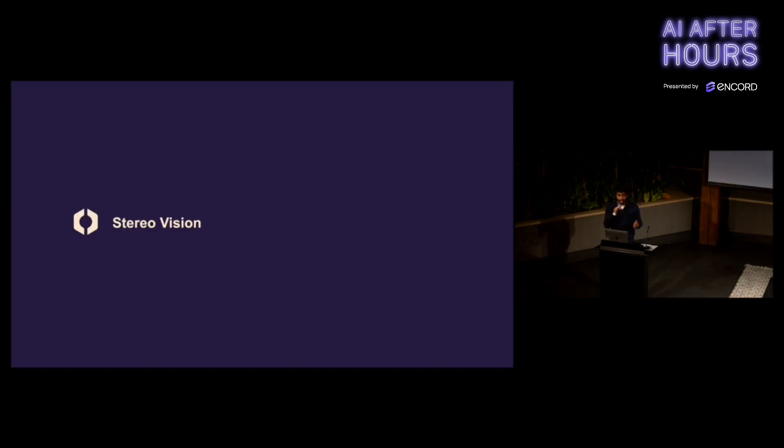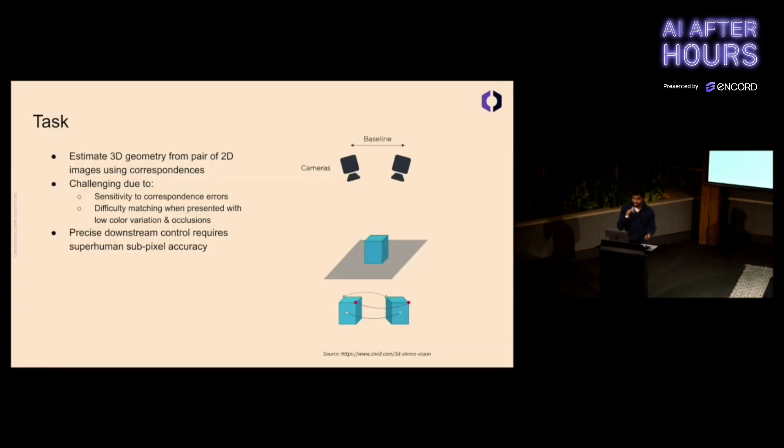Now I'll dive into some of the downstream tasks. The first task is stereo vision, because how can we interact with the world if we don't know what it looks like? Broadly, this task is how do you estimate 3D geometry from a pair of 2D images using correspondences. Basically, if you have a pair of images of this cube from two different cameras, how do you match parts of the cube in one image to the other image? If you see the bottom right-hand corner, we match the green points, the red points. How do we match the white points?